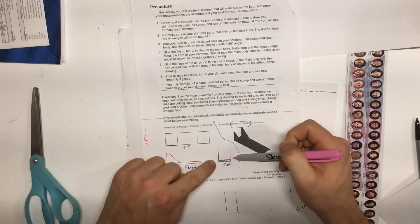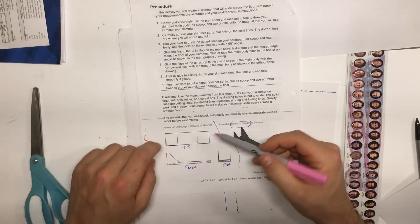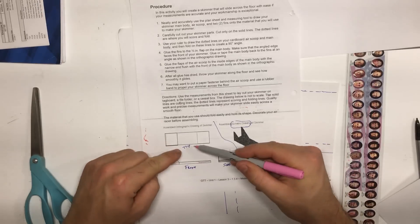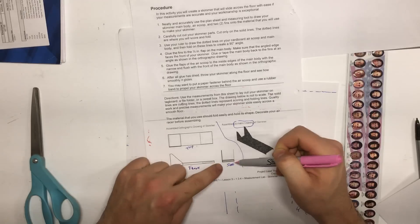This is what our skimmer will look like in the front, top, and side view. Please take a minute right now and identify the front, the top, and the side view of your skimmer.